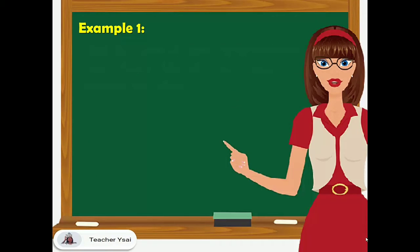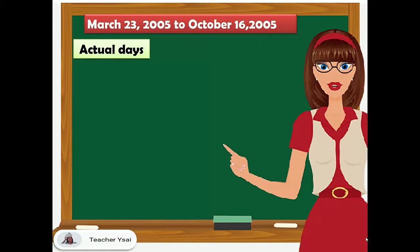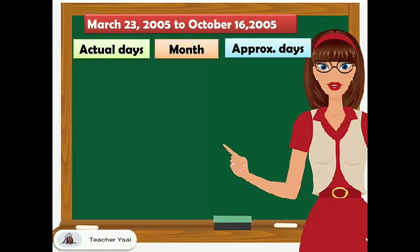For example, find the actual and approximate time from March 23, 2005 to October 16, 2005. So we're going to solve for the actual days and the approximate days.